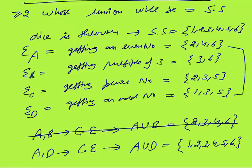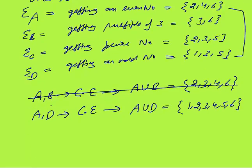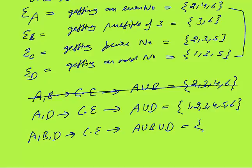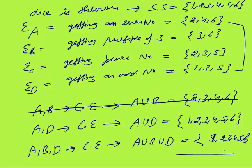Two or more events are collectively exhaustive when their union equals the sample space. You can also say events A, B, and D together are collectively exhaustive, because A union B union D also makes the sample space {1, 2, 3, 4, 5, 6}. So two or more events are collectively exhaustive when their union — including all elements from all sets — equals the sample space.